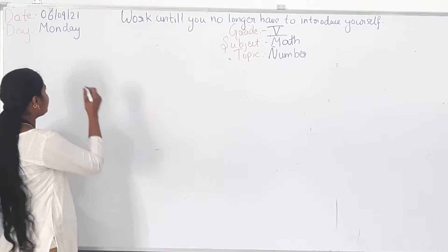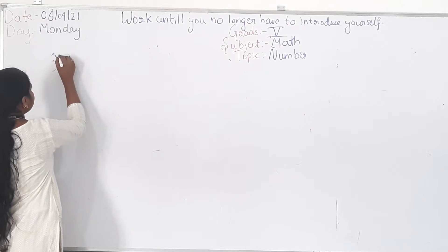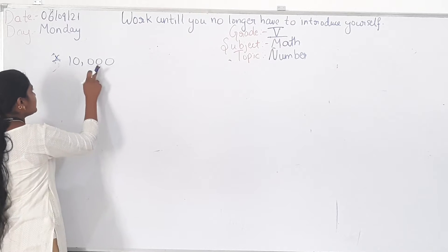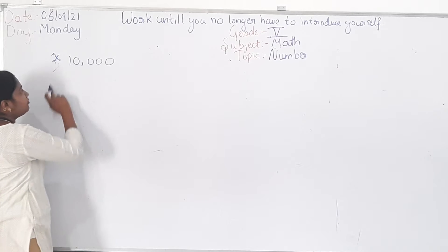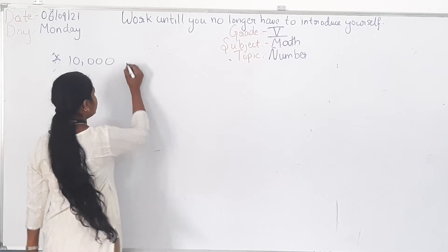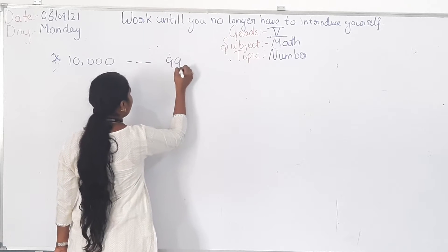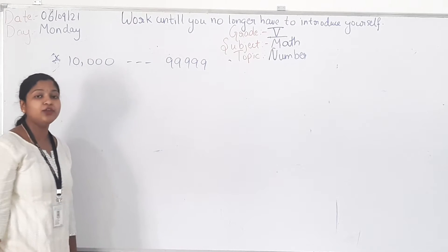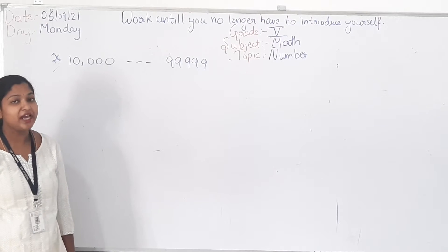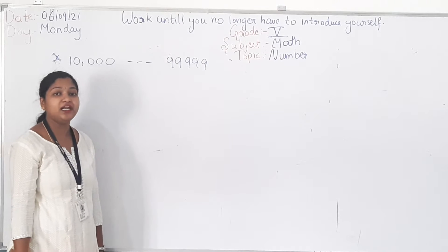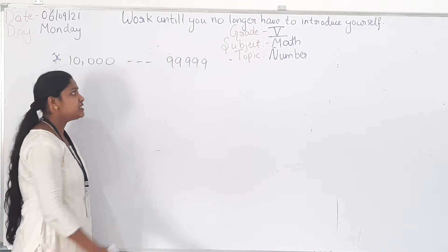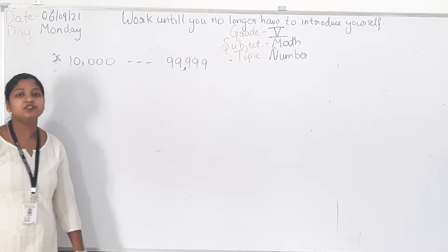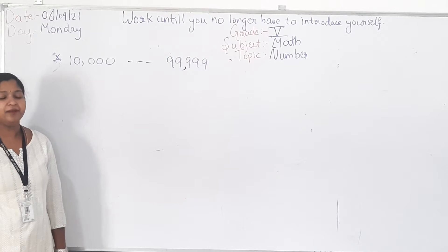What is the least 5-digit number? It is 10,000. Then what is the largest 5-digit number? It is 99,999. You have also learnt that these 5 digits will be separated using periods — units, tens, hundreds are one period, and ten thousands, thousands are one more period.